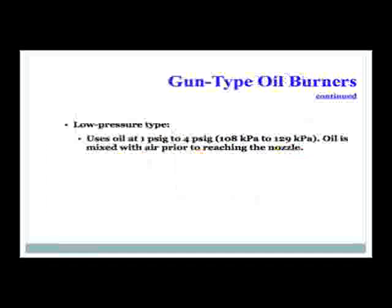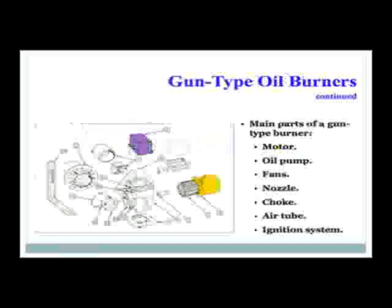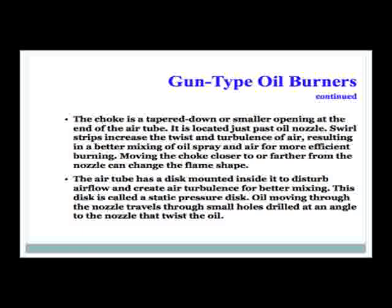The low-pressure type uses oil at 1 to 4 PSI, and oil is mixed with air prior to reaching the nozzle. The main parts of a gun burner are the motor, oil pump, fan, nozzle, choke, air tube, and ignition system. The choke is a tapered or smaller opening at the end of the air tube, located just past the oil nozzle. A swirl strip increases the twist and turbulence of the air, resulting in better mixing of oil spray and air for more efficient burning. Moving the choke closer to or farther from the nozzle can change the flame shape. The air tube has a disc mounted inside it — called a static pressure disc — to disturb airflow and create turbulence for better air mixing. Oil moving through the nozzle travels through a small hole drilled at an angle that twists the oil.